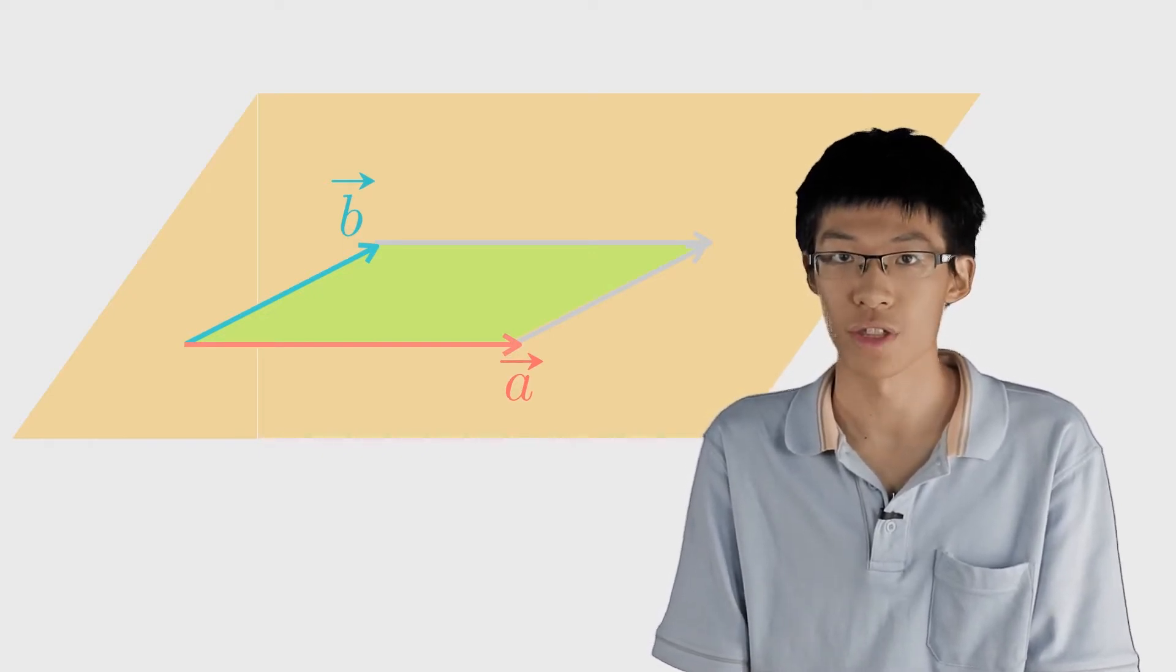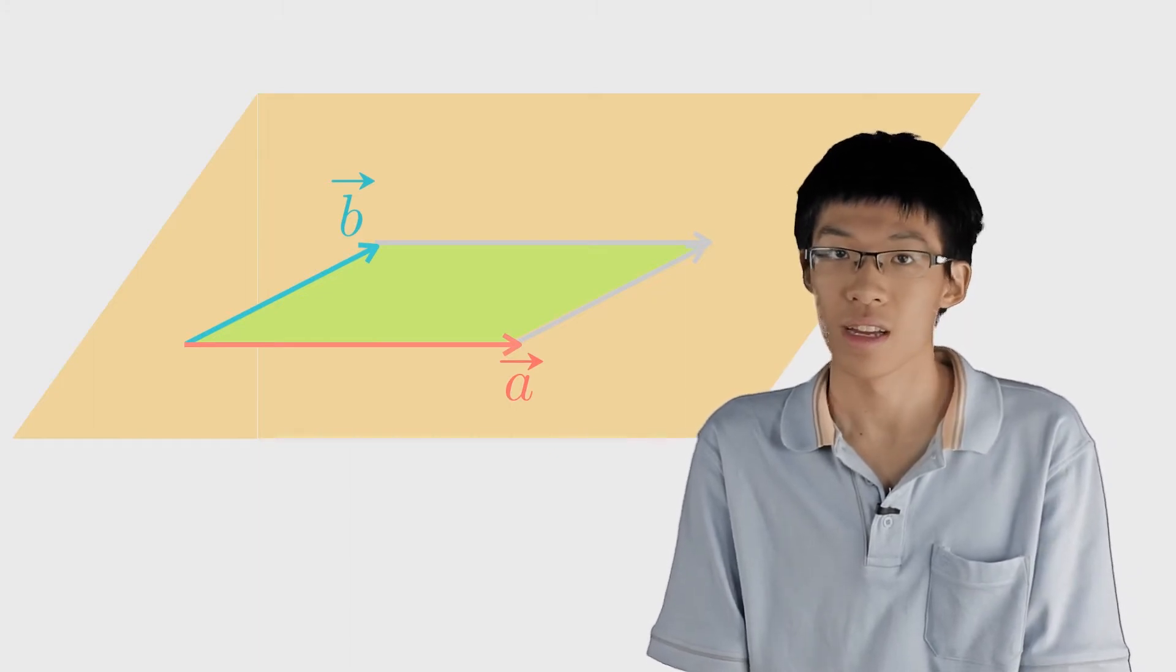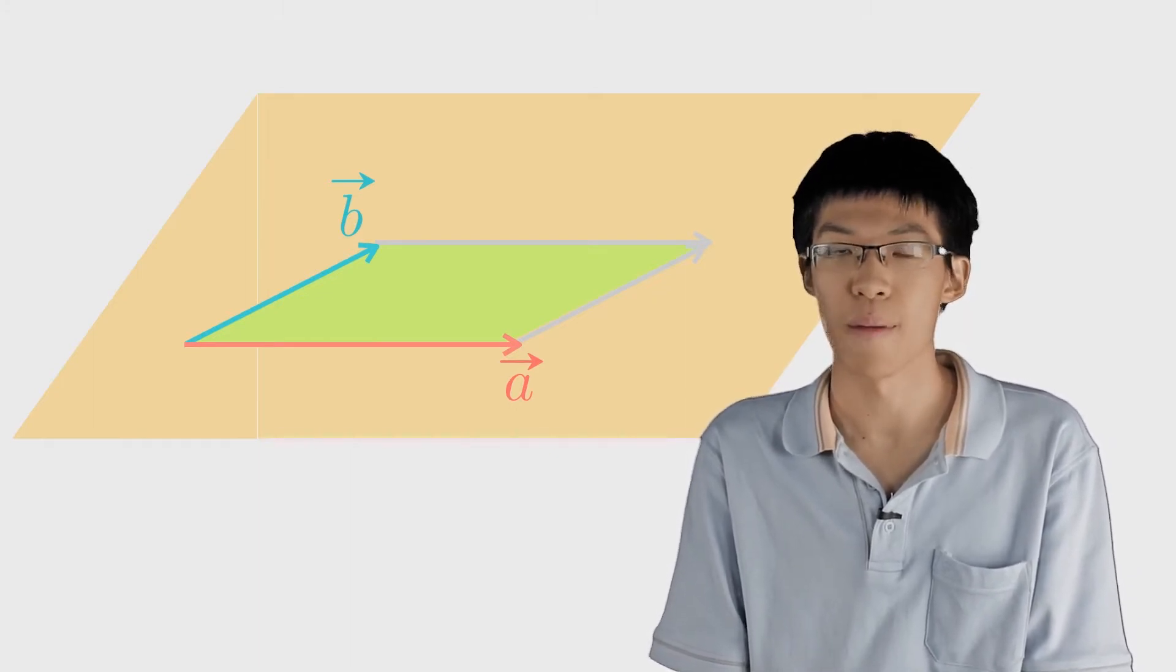Imagine that I have a horizontal parallelogram formed by a and b. When I say horizontal, I mean parallel to the floor.